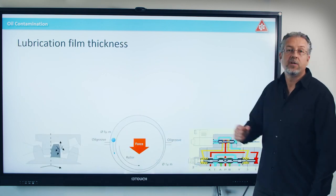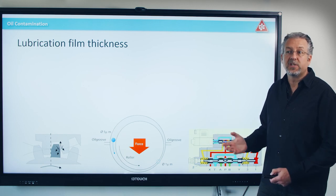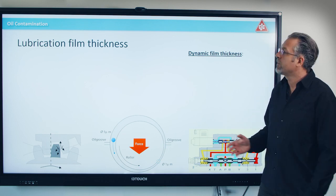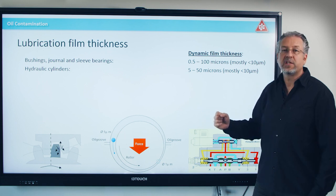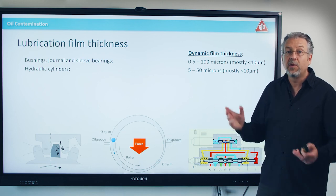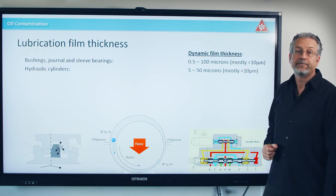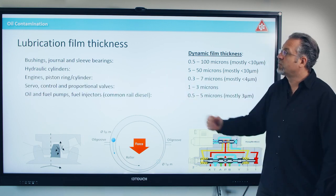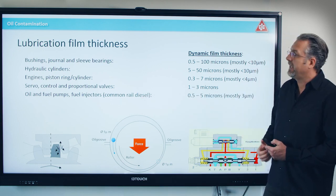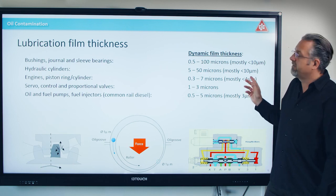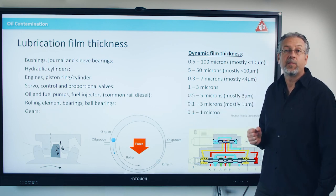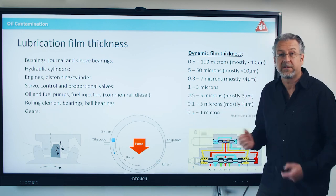If we look at the lubrication film thicknesses when the machine is in operation — that's called dynamic film thickness, not when you're holding the bearing in your hand — the biggest ones are journal bearings, bushings, and hydraulic cylinders. They may be up to 100 micron in oil film thickness, but mostly depending on pressure and load, less than 10 micron. Next, in engines and piston rings, servo valves, different kinds of pumps and fuel systems, you have roughly 3 to 4 micron oil film thickness. And the very tiny ones are ball bearings in gears, where you have roughly only 1 micron in film thickness.